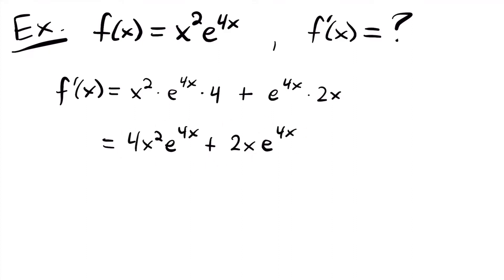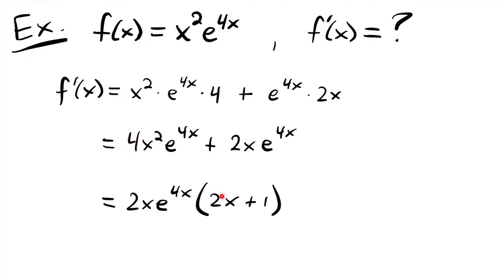This is a perfectly acceptable answer, but I'm going to simplify it a bit more. I notice that each term has a common factor of 2x times e to the power of 4x — we can pull a factor of 2 out of the 4, a factor of x out of x squared, and e to the power of 4x is common to both. Pulling this out of each term, we get 2 times x times e to the power of 4x times the quantity 2x plus 1. This is my final answer for f prime of x.